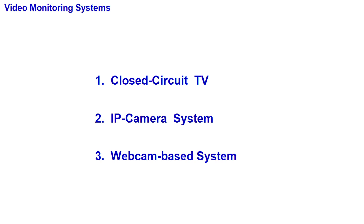There are three types of video monitoring systems. The first type is the closed-circuit TV using its own network. The second type is based on an IP camera using a computer network. The third type is based on a webcam using a PC and the computer network. Here I'd like to talk about the fundamental differences among these three types.